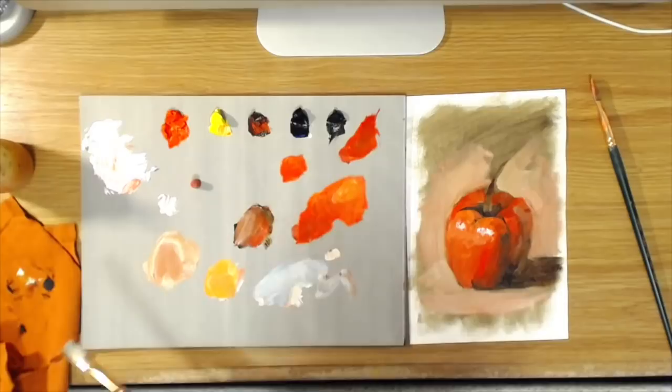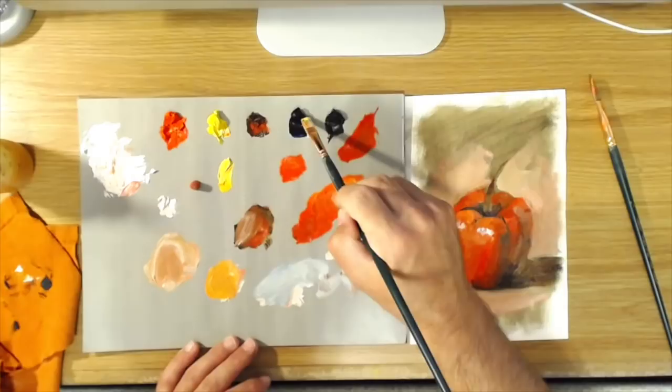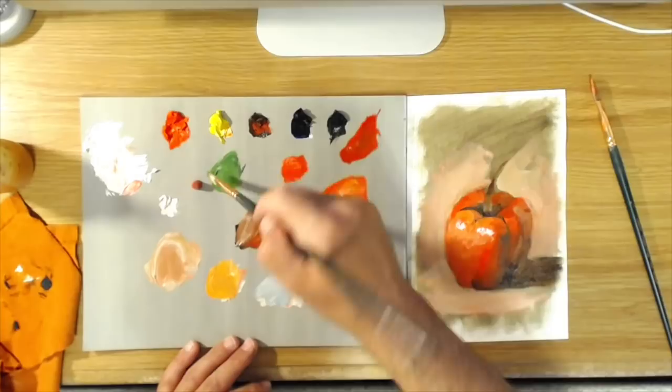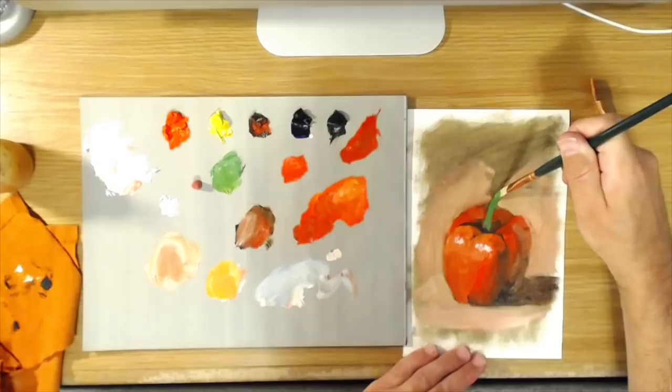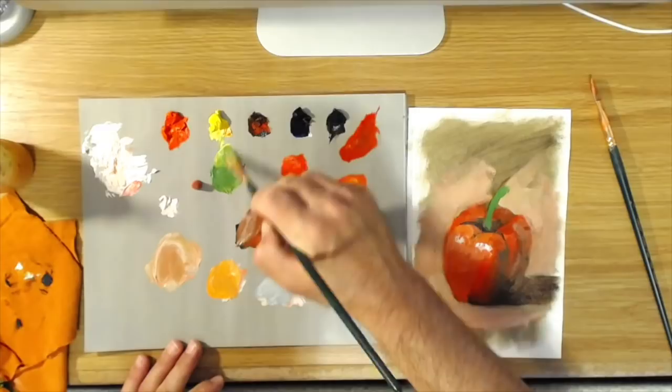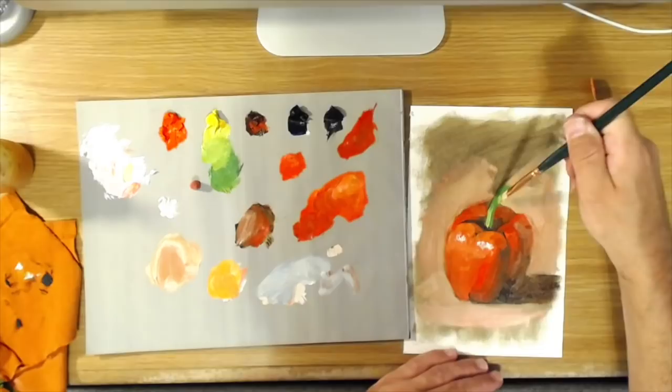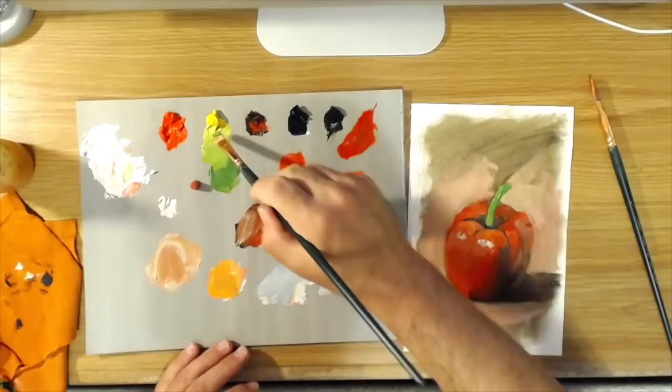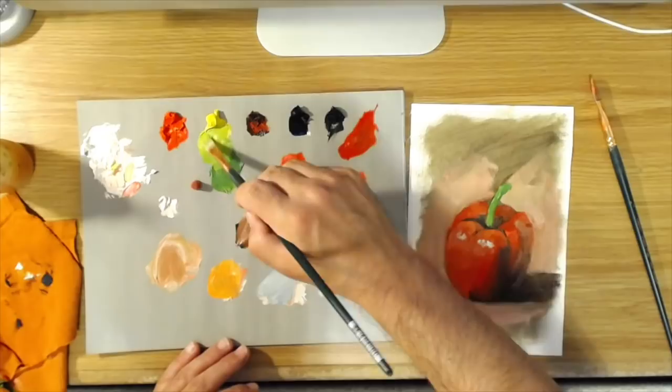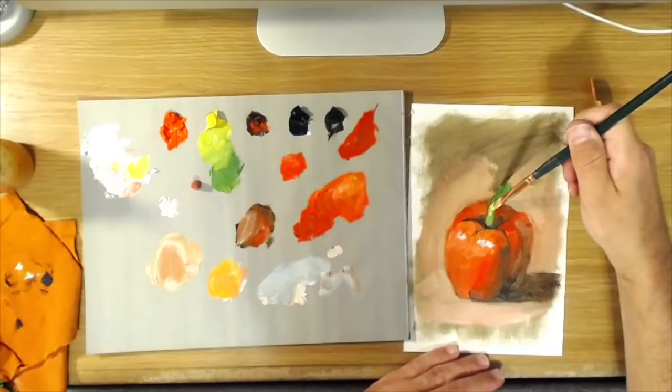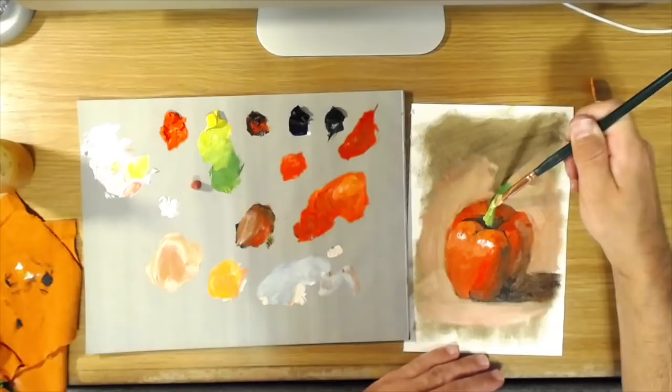And then we can go in and mix a little yellow and blue to make the stem. A little more yellow with that, with some white to lighten it up.